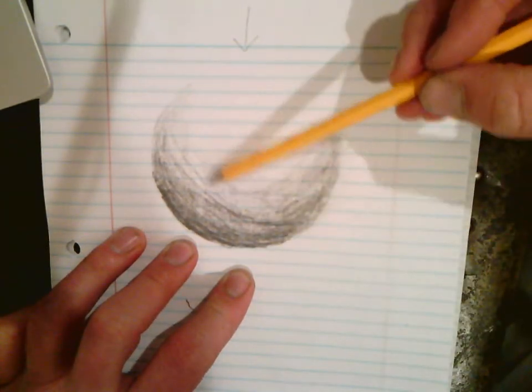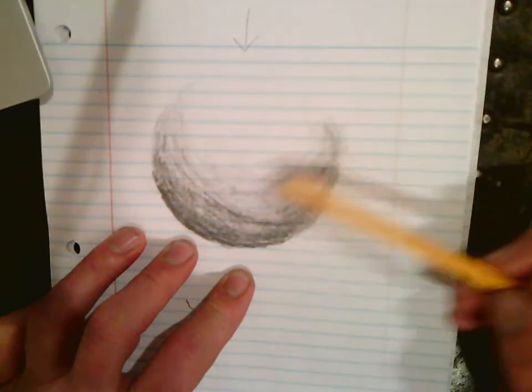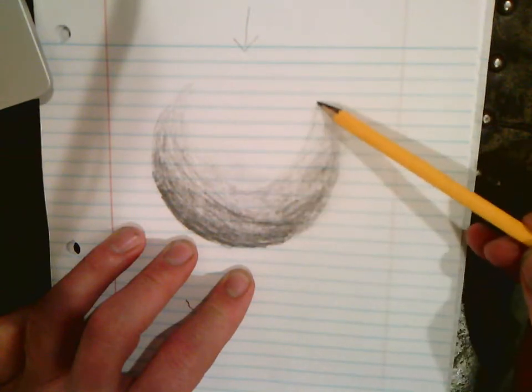You'll also notice that I am using an imaginary contour of this sphere. Never am I going across this way. I'm always going with the curve.